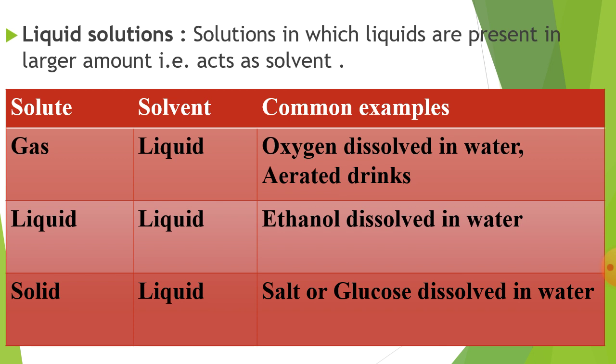Second, liquid solution — a solution in which liquid is present in larger amount, that is, acts as solvent. Here, solvent is liquid and solute may be gas, liquid, or solid. The examples given in the table are: gas in liquid — common example, oxygen dissolved in water, and aerated drinks (cold drinks); liquid in liquid — ethanol dissolved in water; solid in liquid — salt, glucose, or sugar dissolved in water. These are the examples of liquid solutions.